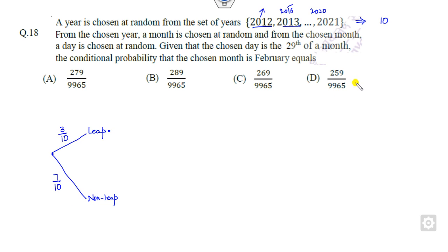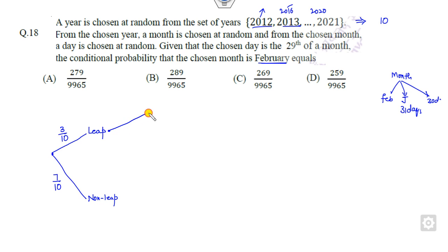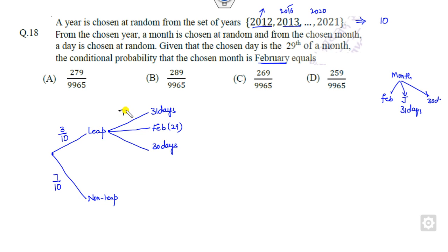Out of these three leap years, you have to choose a month. We categorize months into those with 31 days, February with 29 days, and those with 30 days. The probability of picking a 31-day month is 7/12, since January, March, May and so on give 7 months out of 12. February (29 days) has probability 1/12, and 30-day months have probability 4/12.